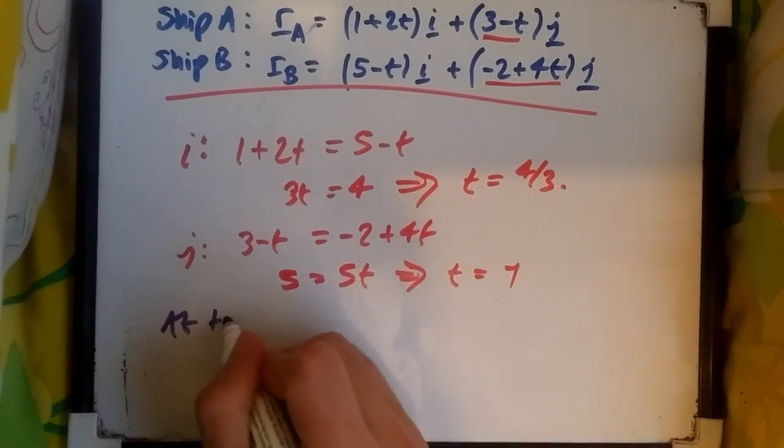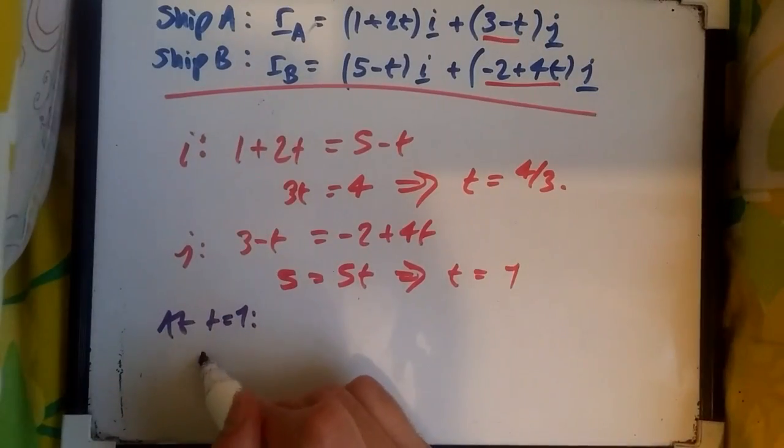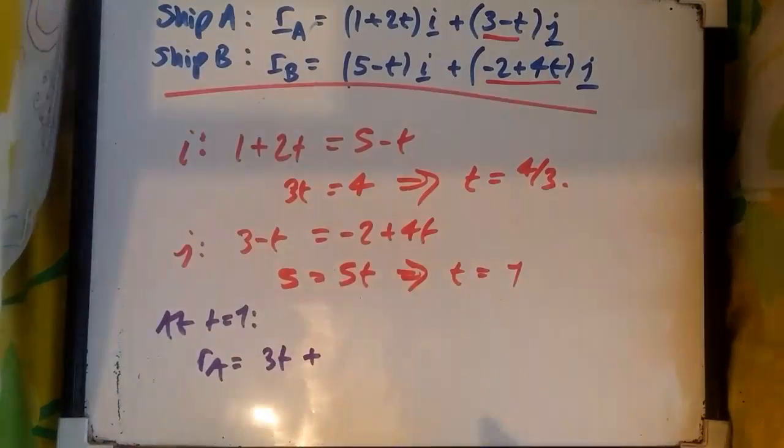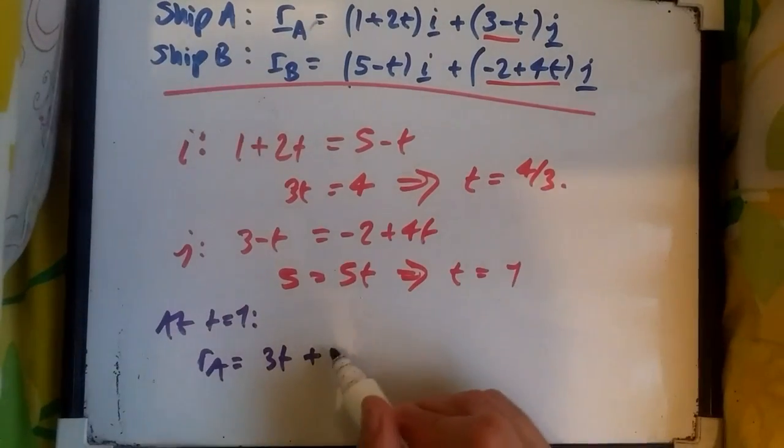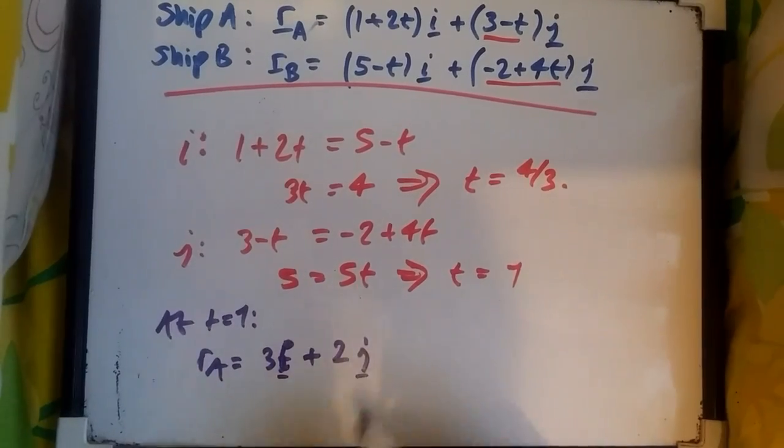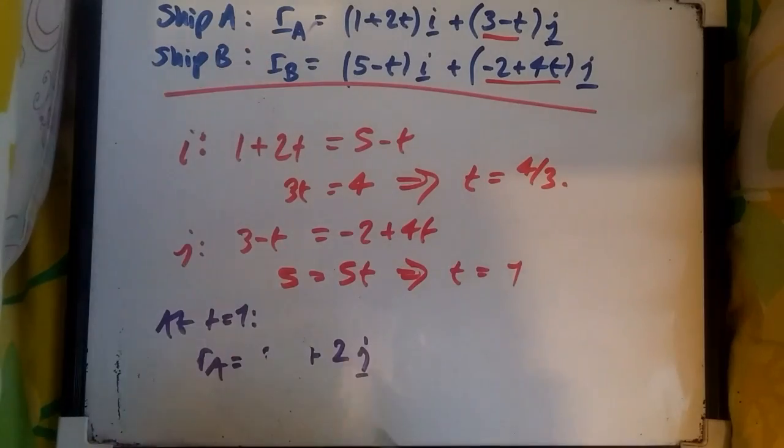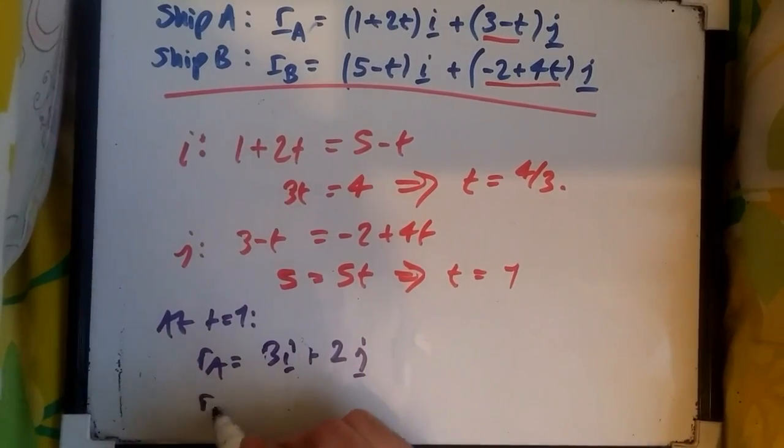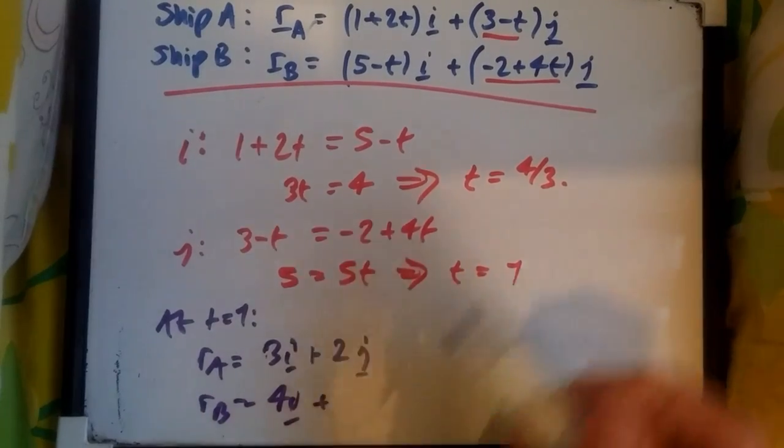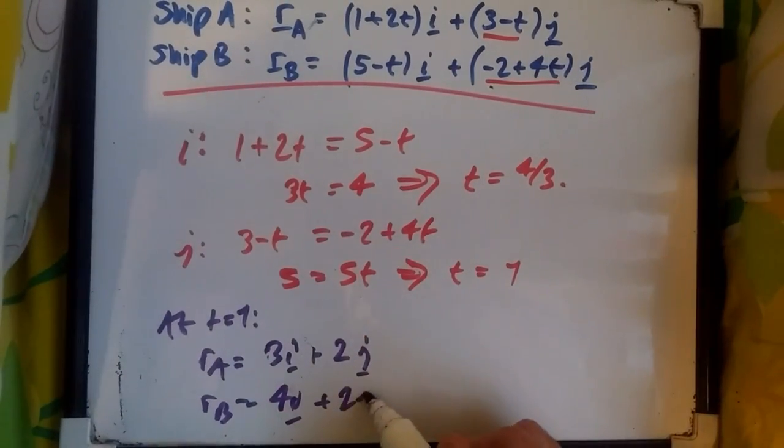By time 1, we see where we're going here, we should get something easy. Where would ship A be? A would be at 1 + 2(1) which is 3i, plus 3 - 1 is 2j. Now ship B, where exactly would it be? B would be at 5 - 1 which is 4i, plus -2 + 4(1) which is 2j.